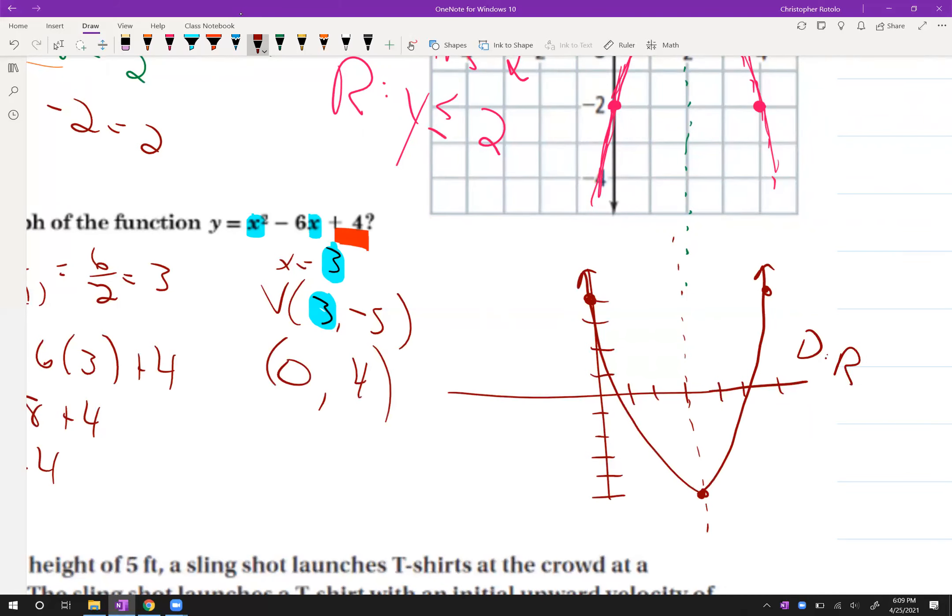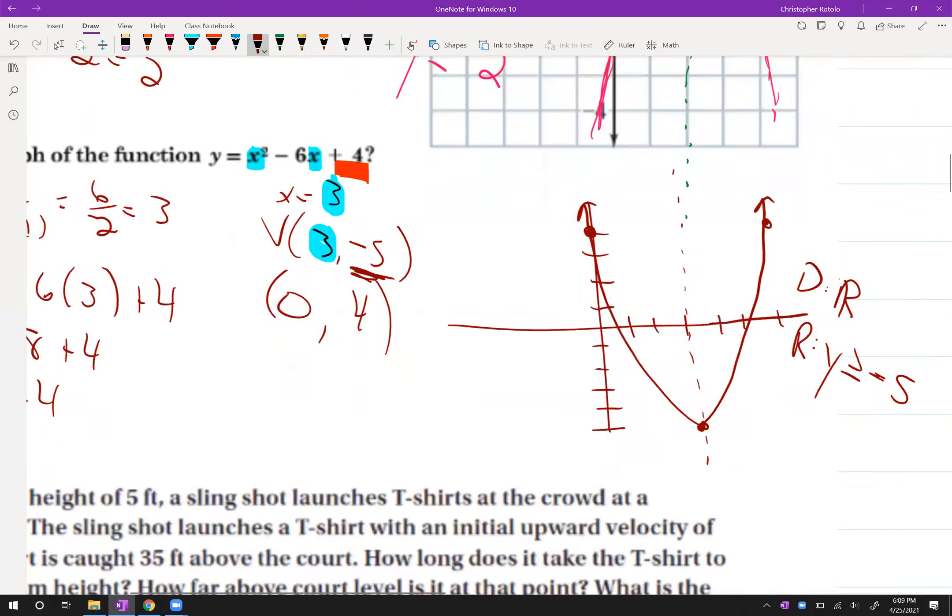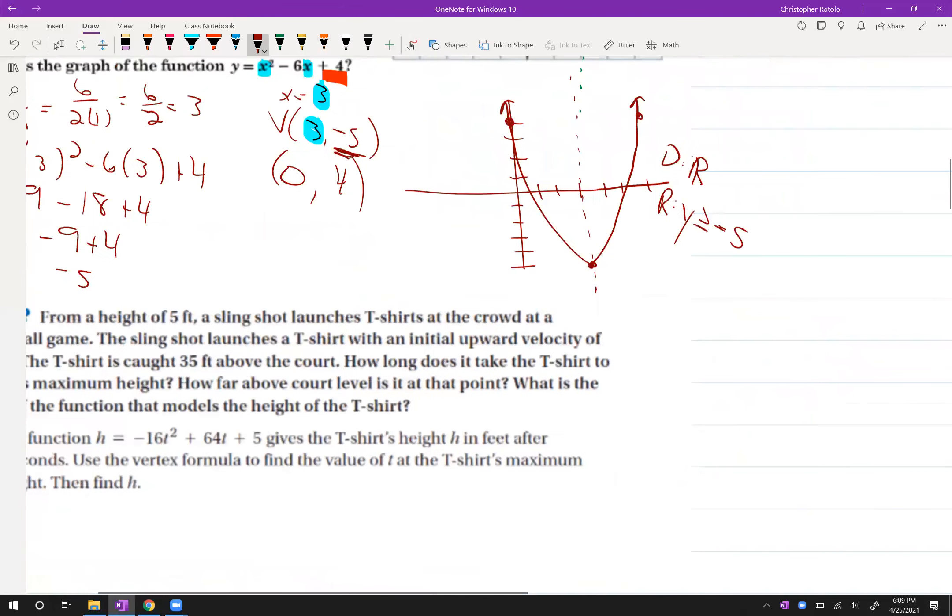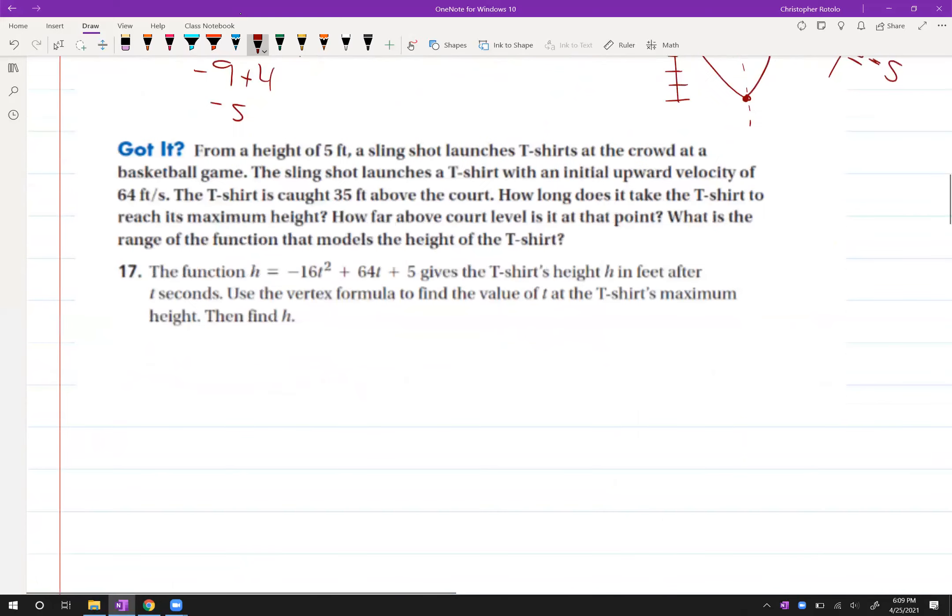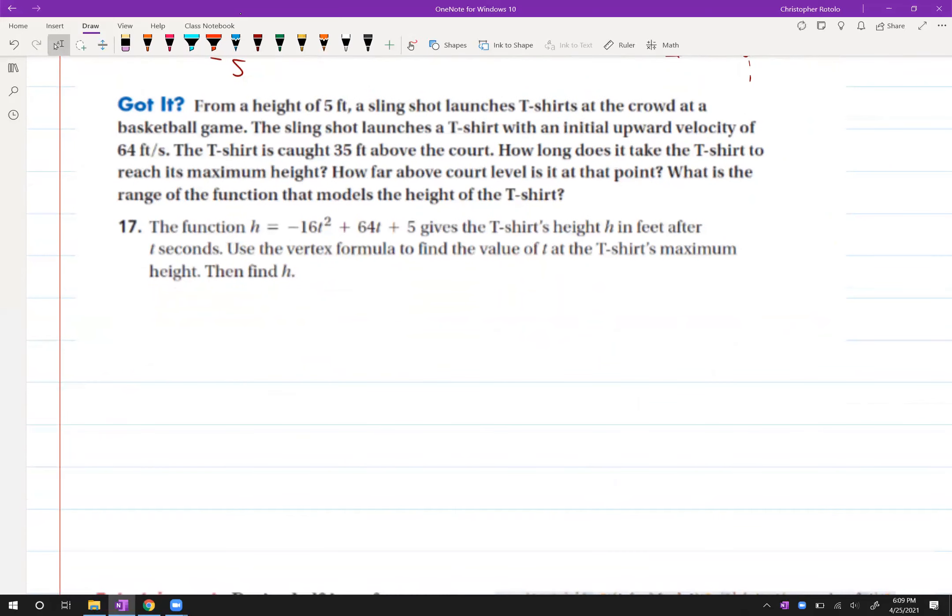And again, we'll tack on domain, all real numbers. And the range y is greater than it opens up. And the y value was negative 5. All right. So now that we have that, we can start to ask you some of these flying objects.